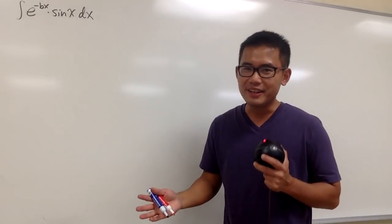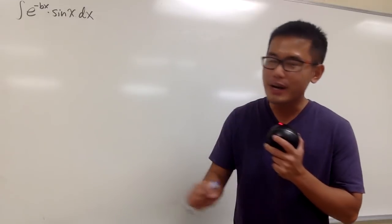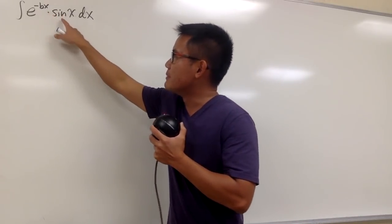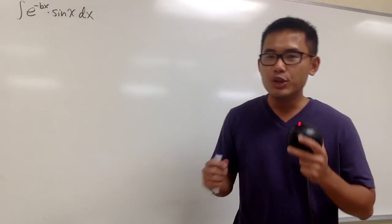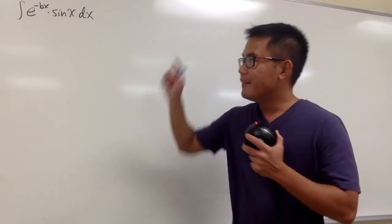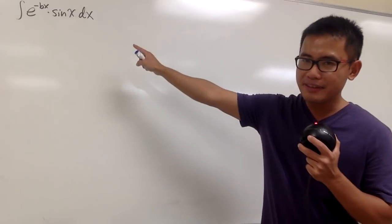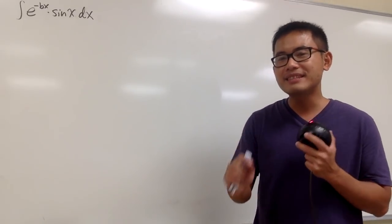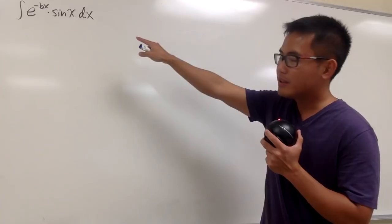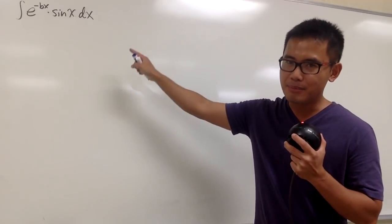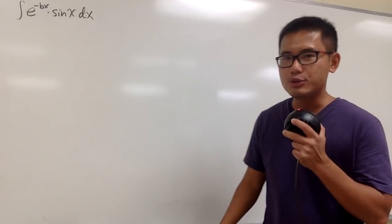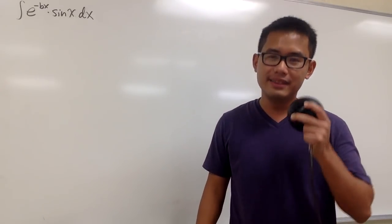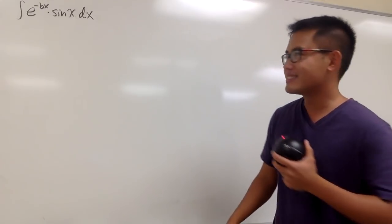Right now I'm going to serve you guys the dessert. We are going to integrate e to the negative bx times sin x. But this time, we'll integrate this with complex numbers. This is usually called complexifying the integral. I will show you guys how it works.